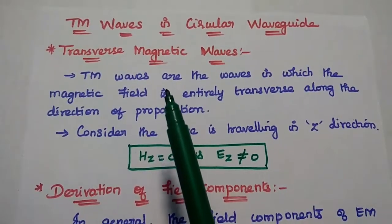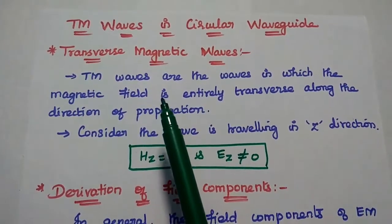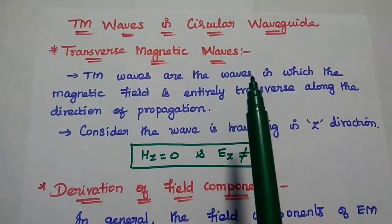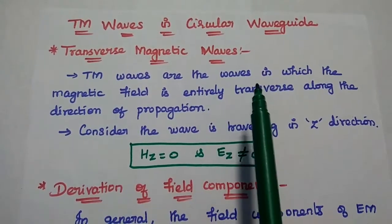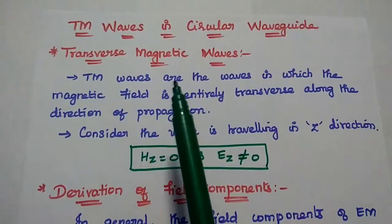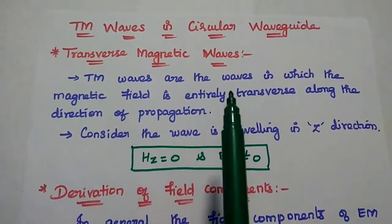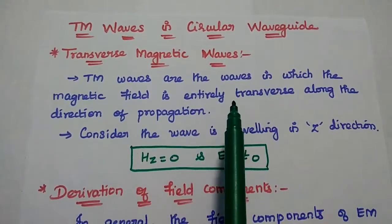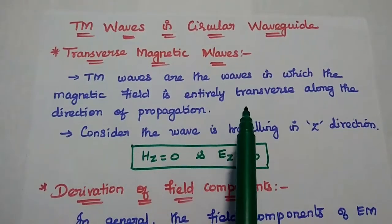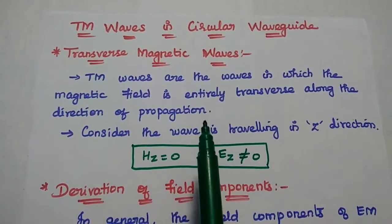Dear students, now we are going to discuss TEM waves in circular wave guide and derive its field equations. TEM means transverse magnetic waves. TEM waves are the waves in which the magnetic field is entirely transverse along the direction of propagation.